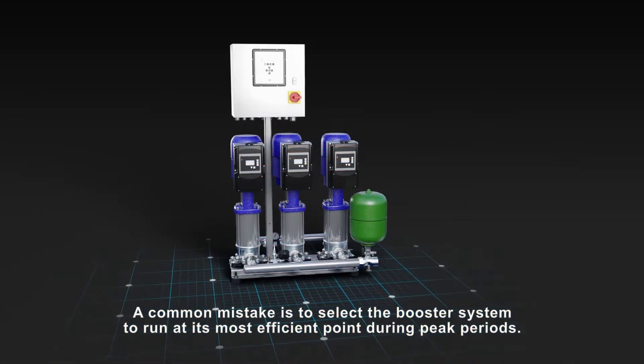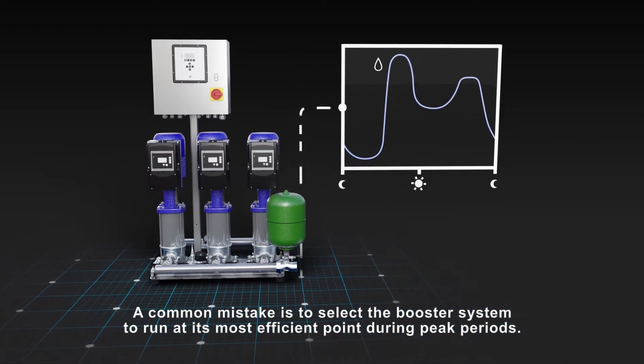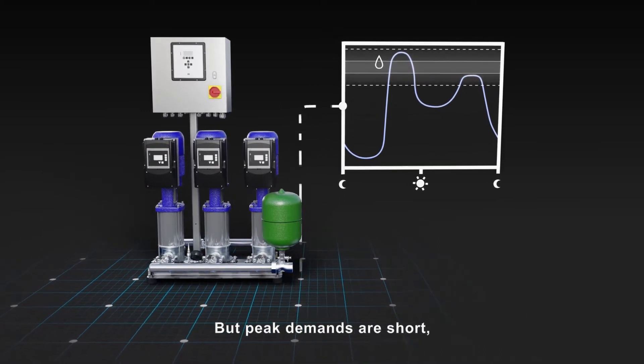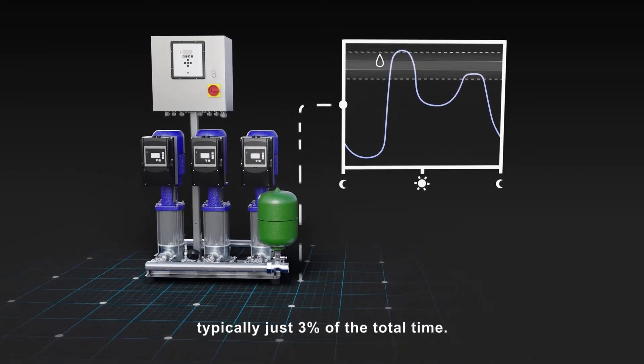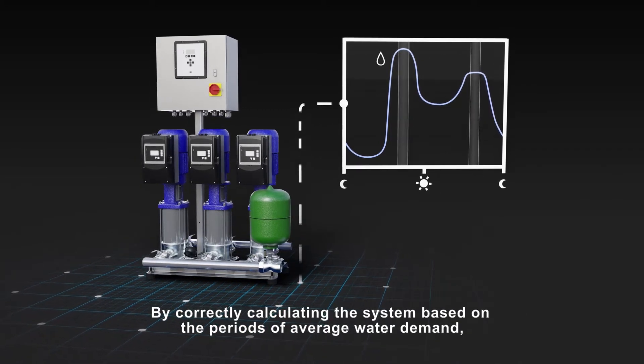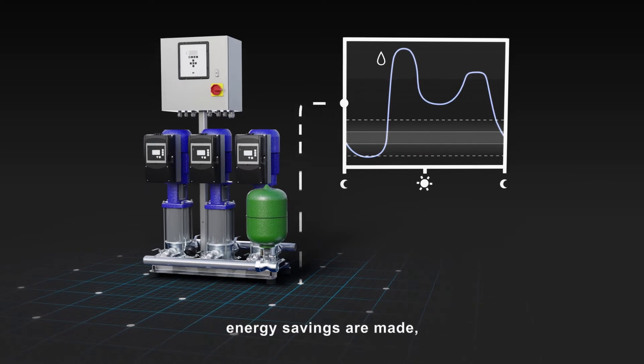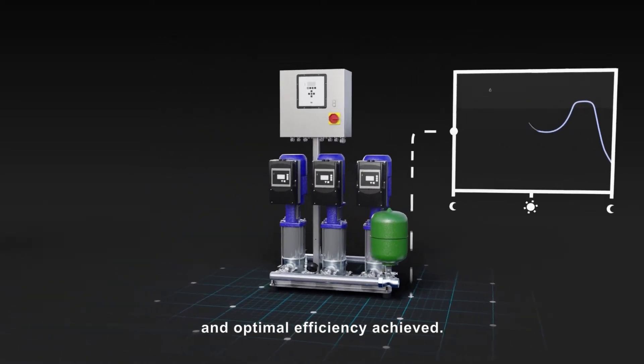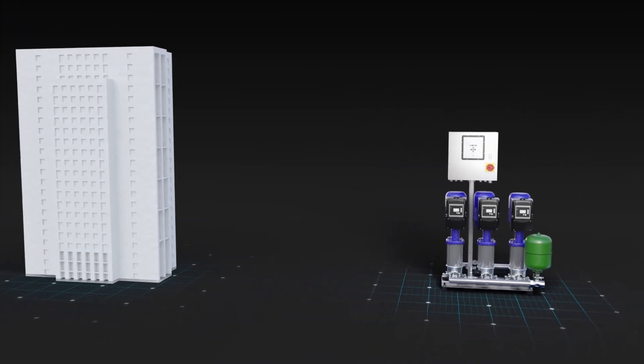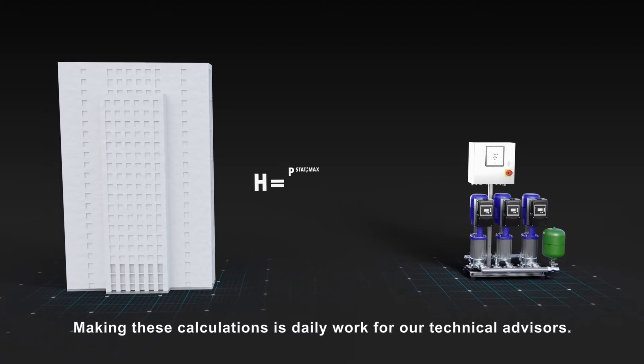A common mistake is to select the booster system to run at its most efficient point during peak periods. But peak demands are short, typically just 3% of the total time. By correctly calculating the system based on the periods of average water demand, energy savings are made, peak time water pressure delivered and optimal efficiency achieved. Making these calculations is daily work for our technical advisors.